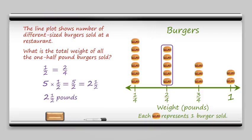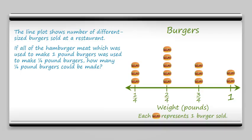Good job. Let's try just one more. Here, we're given the different size burgers, how many we have. And we want to know if all of the hamburger meat which was used to make the 1 pound burgers was used to make 1/4 pound burgers, how many 1/4 pound burgers could be made.